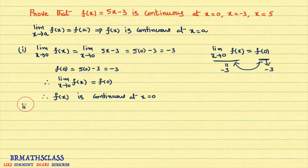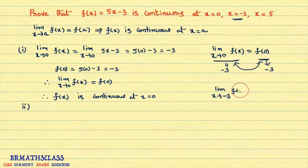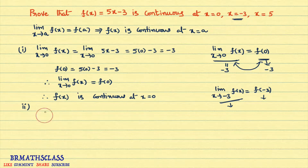Second part: check continuity at x = −3. When we say the function is continuous at x = −3, we need limit as x approaches −3 of f(x) to equal f(−3). I'll calculate the limit first, then f(−3). If both are the same, the function is continuous at x = −3.